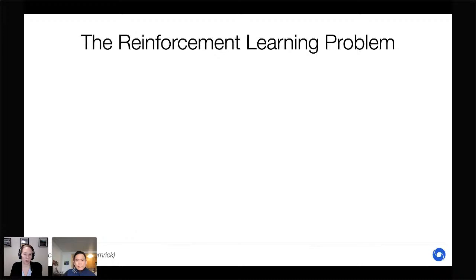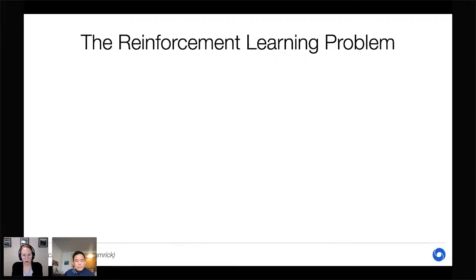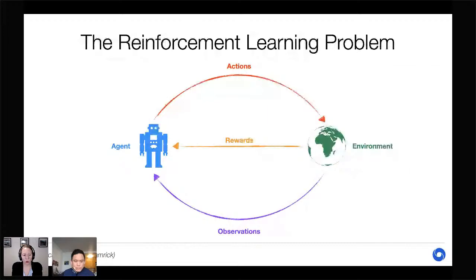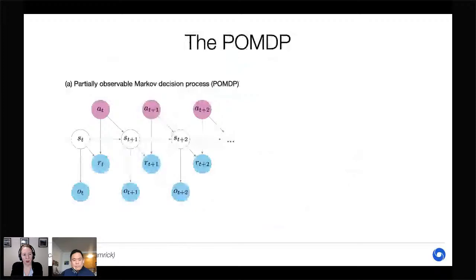Reinforcement learning is the problem of learning how to act in the world in order to maximize a reward signal. An agent in an environment receives observations — for example, visual stimuli — takes actions such as motor control, which affect the environment, and the environment then produces more observations along with a reward signal telling the agent how well it's doing. The main framework used is the MDP, or Markov Decision Process, or its partially observed variant, the POMDP.